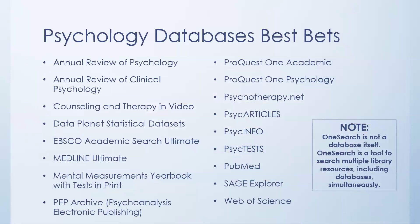Here are some psychology best bets, from Annual Review of Psychology all the way through Web of Science. There are more than this, and there are multidisciplinary databases that are good for psychology content — I've just listed some of the most useful psychology-specific databases. We have a subject guide for psychology students that lists many of these. Please note that OneSearch is not a database itself — it's a tool that allows you to search in multiple library resources, including databases, all at the same time.